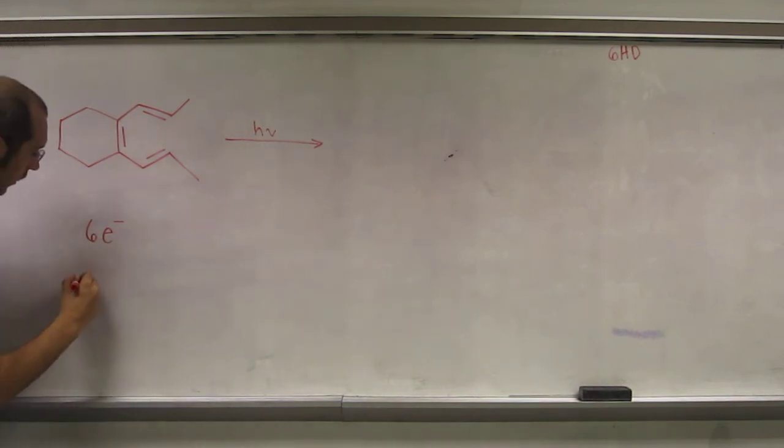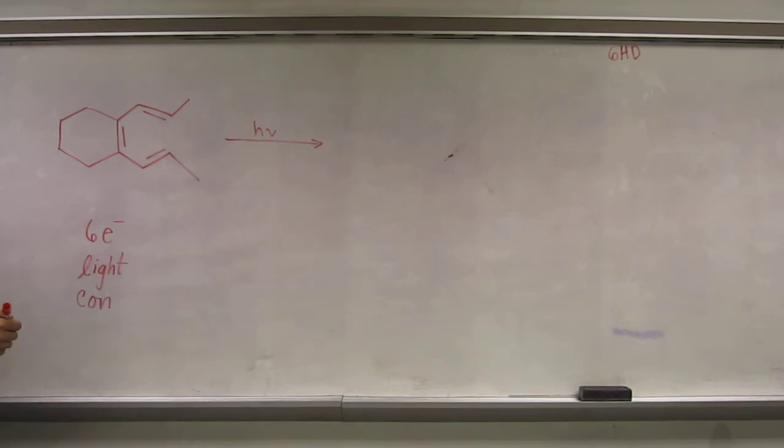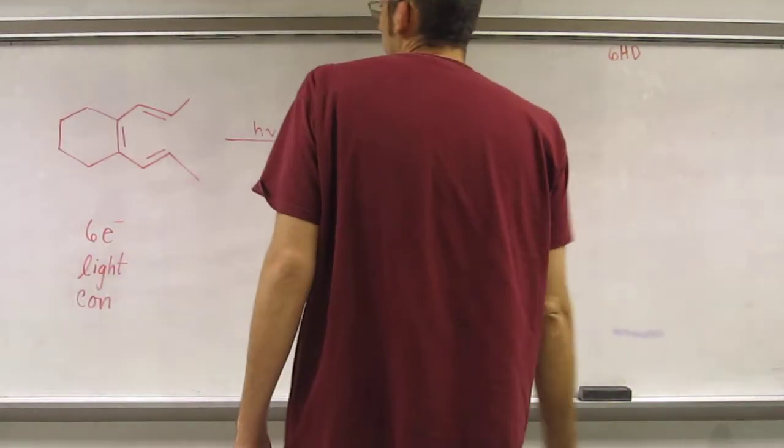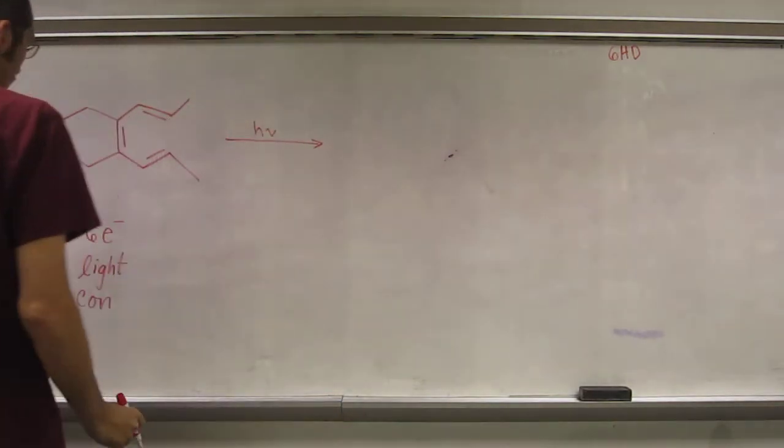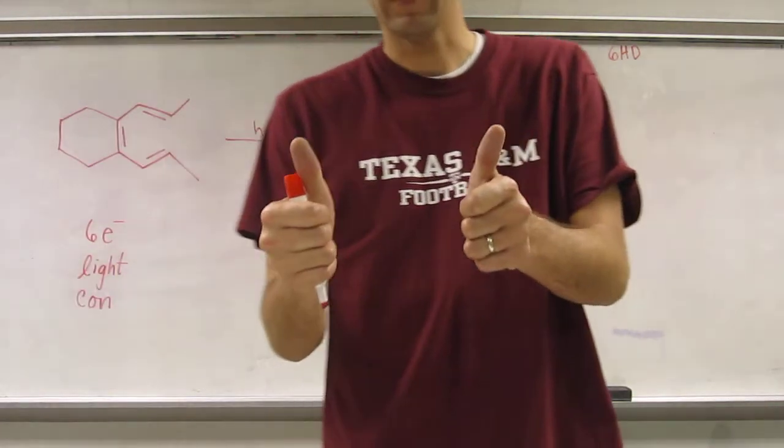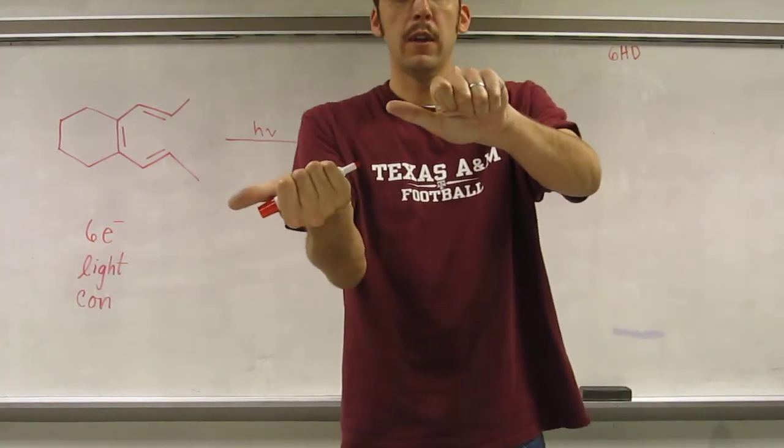It's light and not heat, so it's going to be con. So 6 light con, because of 6HD, 6 heat disc. So what does con mean? That means conrotatory, so that means that both of them are going to spin the same way.